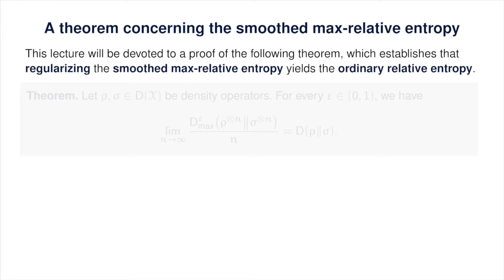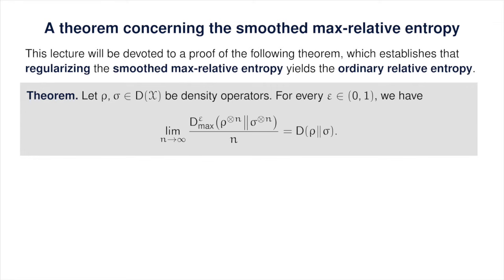Let's start with a precise statement of the theorem. Assume that rho and sigma are density operators acting on some complex Euclidean space X, and let epsilon be any real number in the open interval between 0 and 1. It is then the case that if we regularize the smooth max relative entropy of rho with respect to sigma — taking the limit as n goes to infinity of 1 over n times the smooth max relative entropy of n copies of rho with respect to n copies of sigma — we get the ordinary quantum relative entropy of rho with respect to sigma.